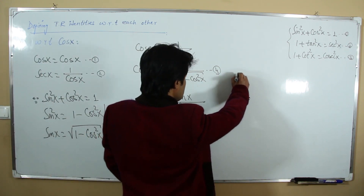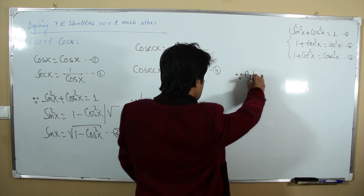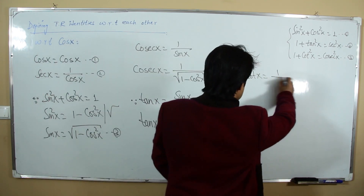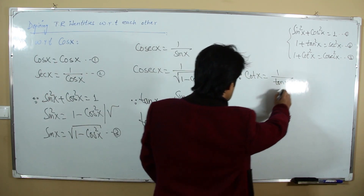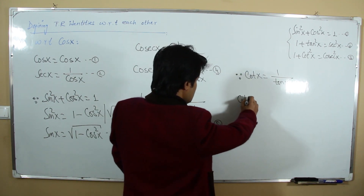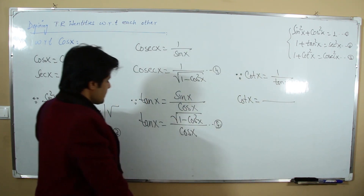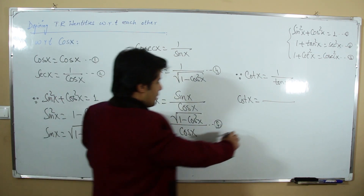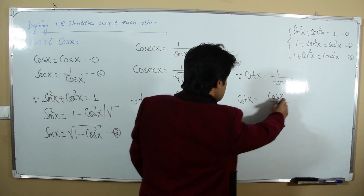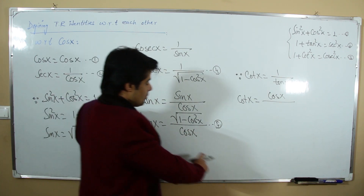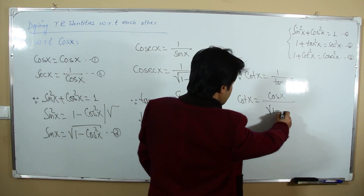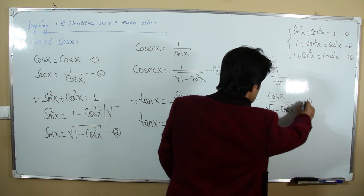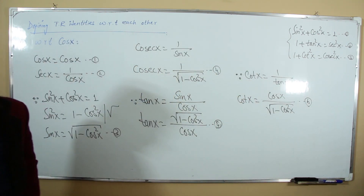Cotangent is the reciprocal of tangent, so cotangent with respect to cosine is cos x / √(1 - cos²x). This is our sixth relation.